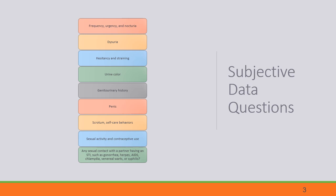A genitourinary-focused subjective assessment should include questions about urination. Are they experiencing any frequency, urgency, or having to urinate more at night? Is there any discomfort with urination? Are they having any difficulty starting their stream or dribbling? What is the color of the urine? Ask about general genitourinary history, including incontinence and any history of surgery or disease.